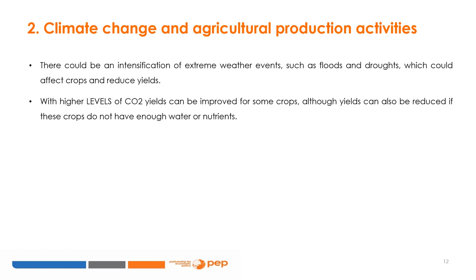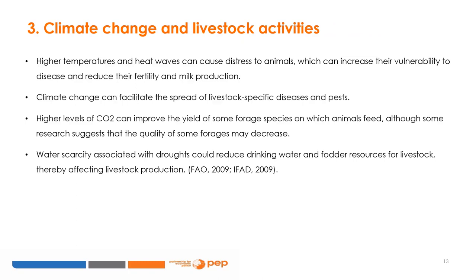Also from the FAO, an intensification of extreme weather events such as floods and droughts can affect crops and reduce yields. Higher levels of CO2 can improve yields for some crops, although yields can also be reduced if these crops do not have enough water or nutrients. Higher temperatures and heat waves can cause distress to animals, increasing their vulnerability to disease and reducing their fertility and milk production. Climate change can also facilitate the spread of livestock-specific diseases and pests. Water scarcity associated with droughts could reduce drinking water and fodder resources for livestock, effectively decreasing livestock production.